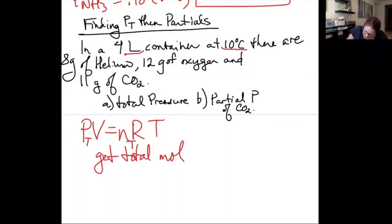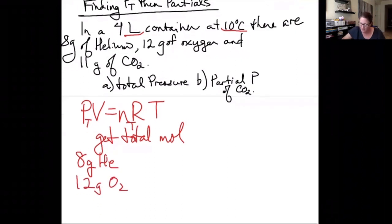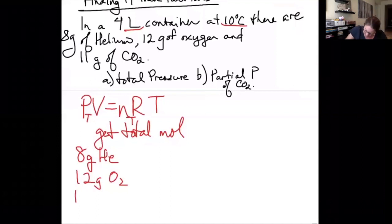So let's take a look. We've got 8 grams of helium. We have 12 grams of oxygen, which is diatomic, and we have 11 grams of CO2.